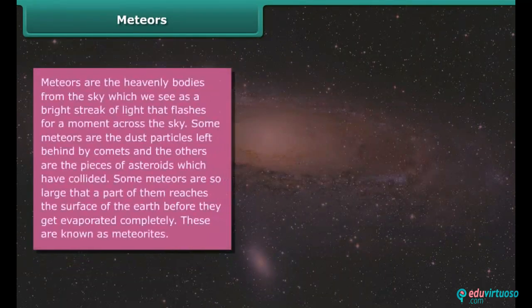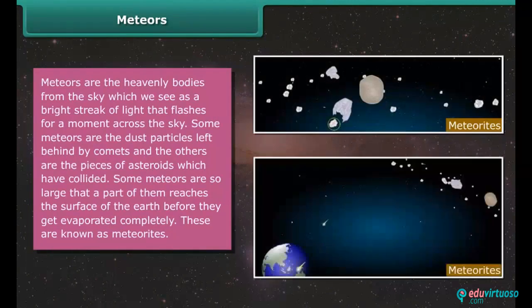Meteors. Meteors are the heavenly bodies from the sky which we see as a bright streak of light that flashes for a moment across the sky. Some meteors are the dust particles left behind by comets and the others are the pieces of asteroids which have collided. Some meteors are so large that a part of them reaches the surface of the earth before they get evaporated completely. These are known as meteoroids.